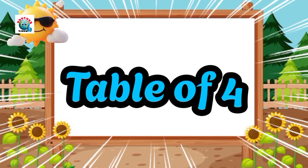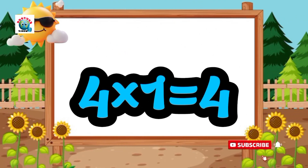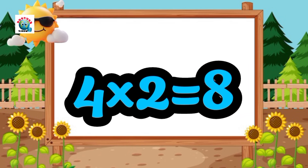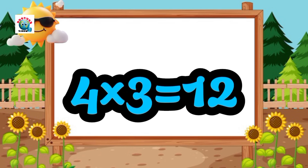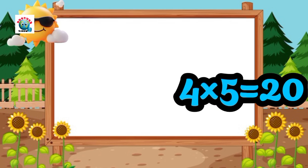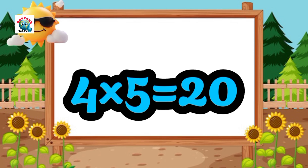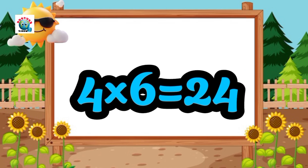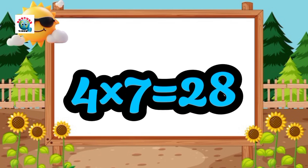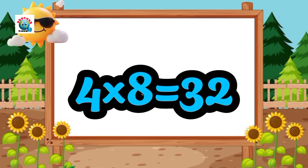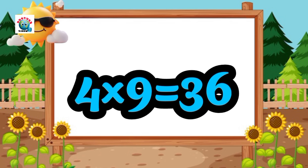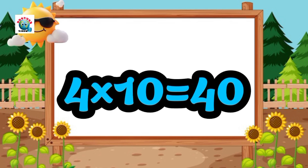Table of four. Four ones are four, four twos are eight, four threes are twelve, four fours are sixteen, four fives are twenty, four sixes are twenty-four, four sevens are twenty-eight, four eights are thirty-two, four nines are thirty-six, four tens are forty.